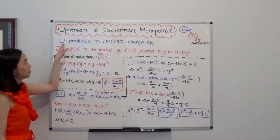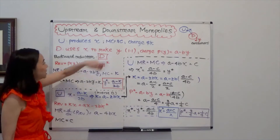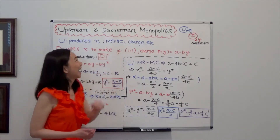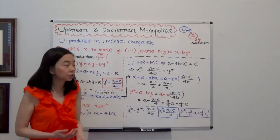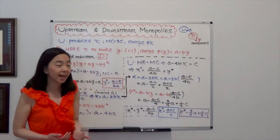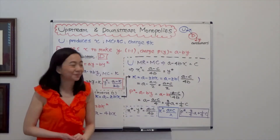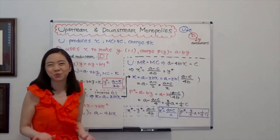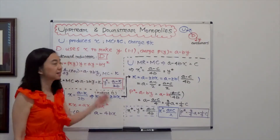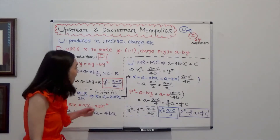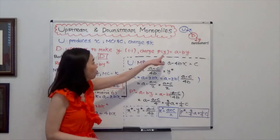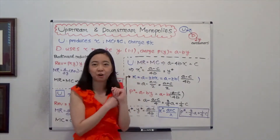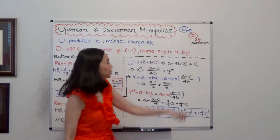So here's the setup. Company U produces X and the marginal cost of producing X is equal to C dollars, and Company U is going to charge K dollars for each unit of X it sells to Company D. Now Company D is going to use X to make Y and the ratio is 1 to 1, so for each unit of X, Company D can produce 1 unit of Y. And Company D is going to charge for product Y according to the inverse demand function, so price is a function of output Y, and that is equal to A minus BY.